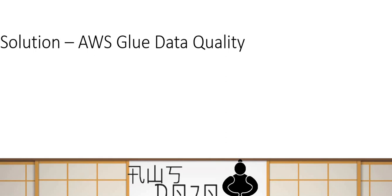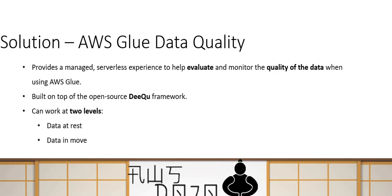How do we solve this data quality challenge? The answer is AWS Glue Data Quality, recently announced at re:Invent in Las Vegas. It is a serverless managed service provided by AWS Glue. It uses the open source framework DQ, and it can work at two levels: it can look at data quality at rest, and it can also look at data quality in move — meaning you can check data quality within the Glue job pipeline itself before doing anything with the data.